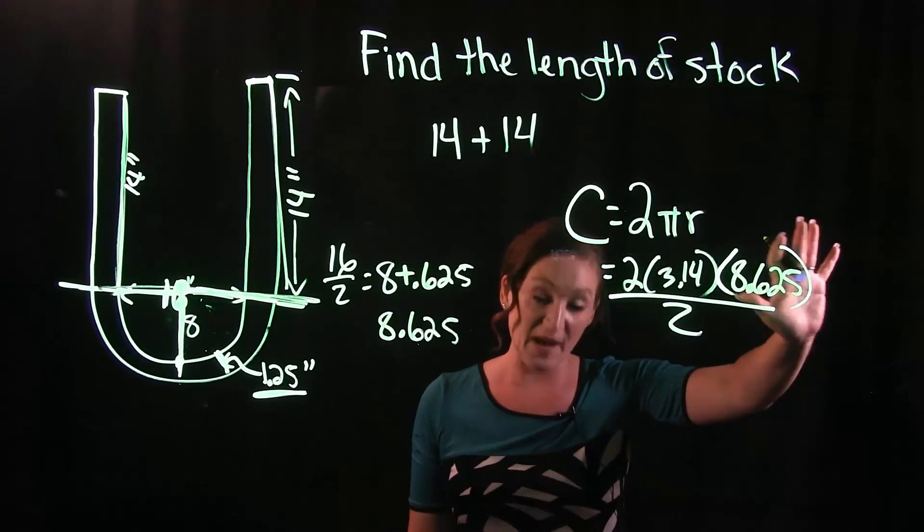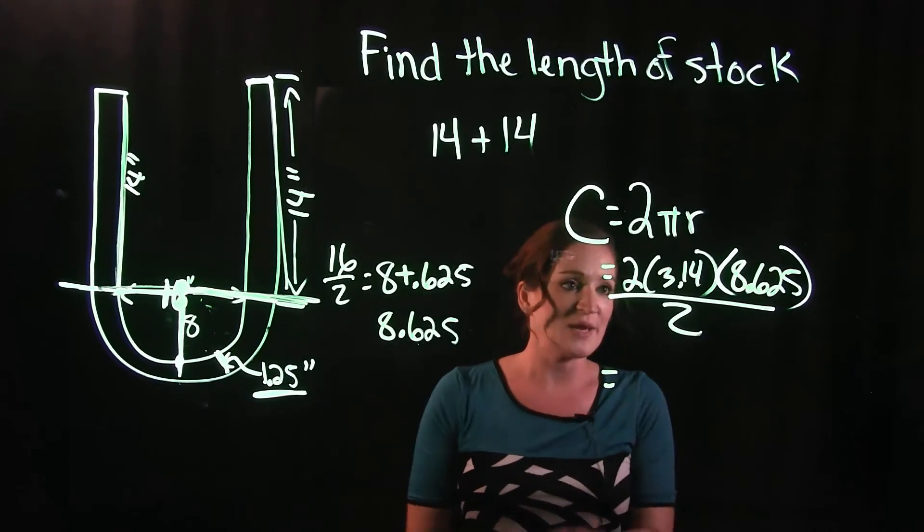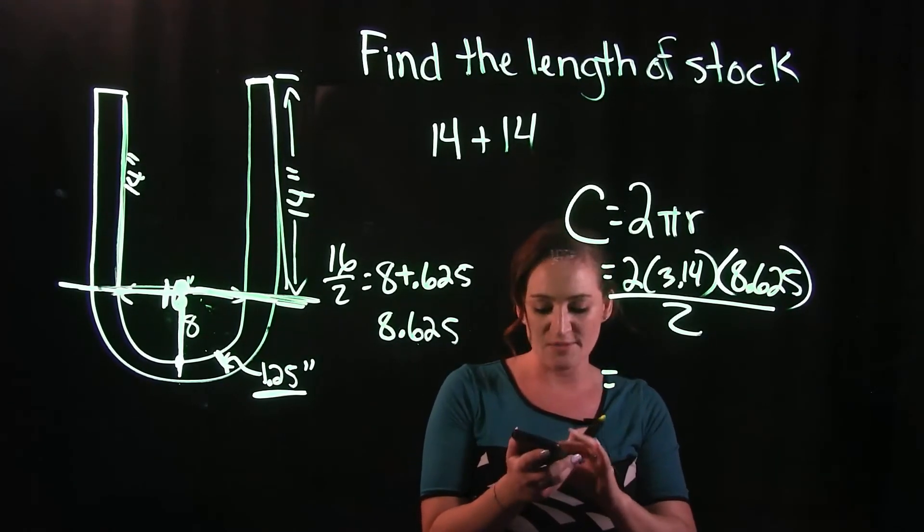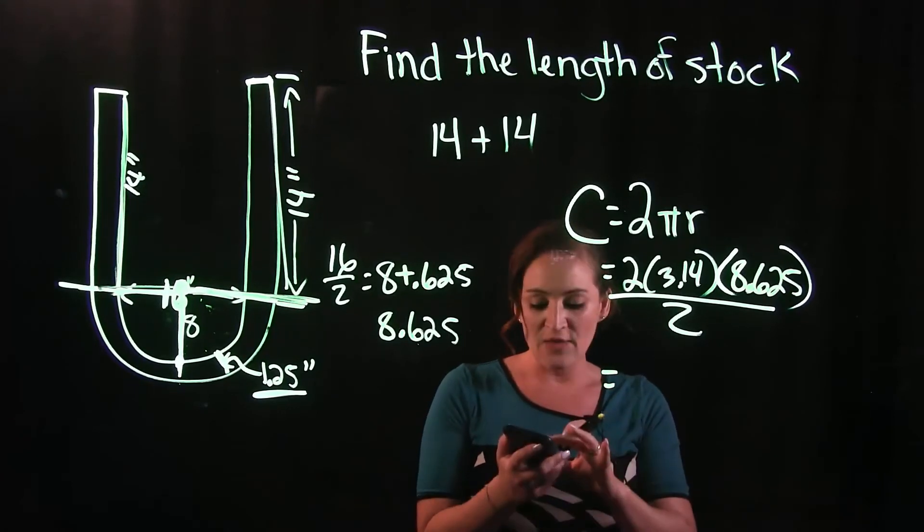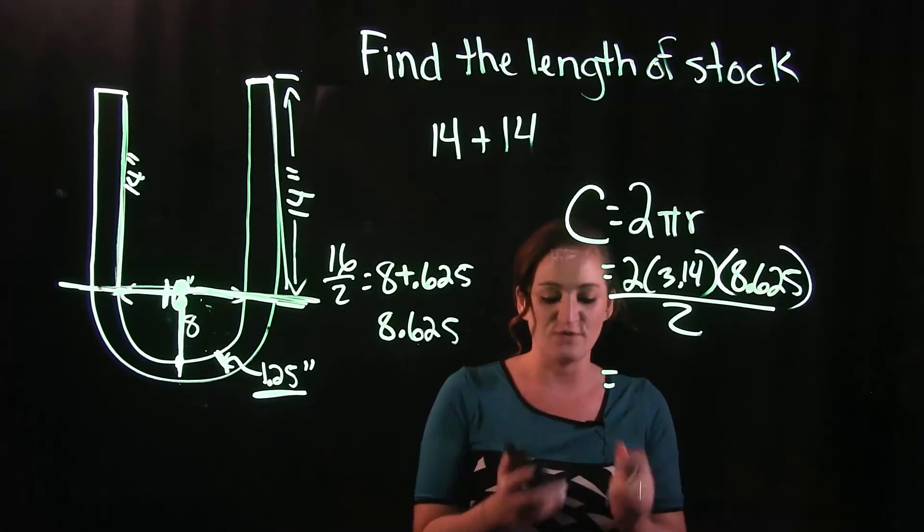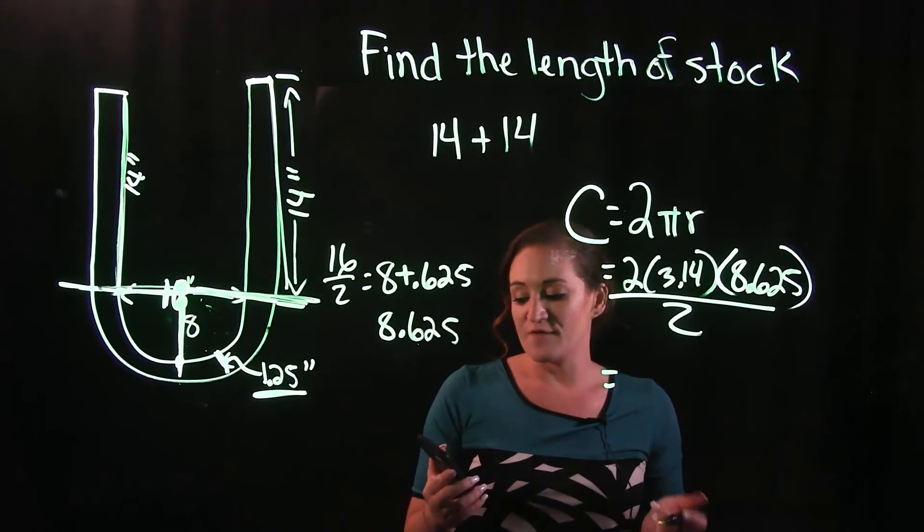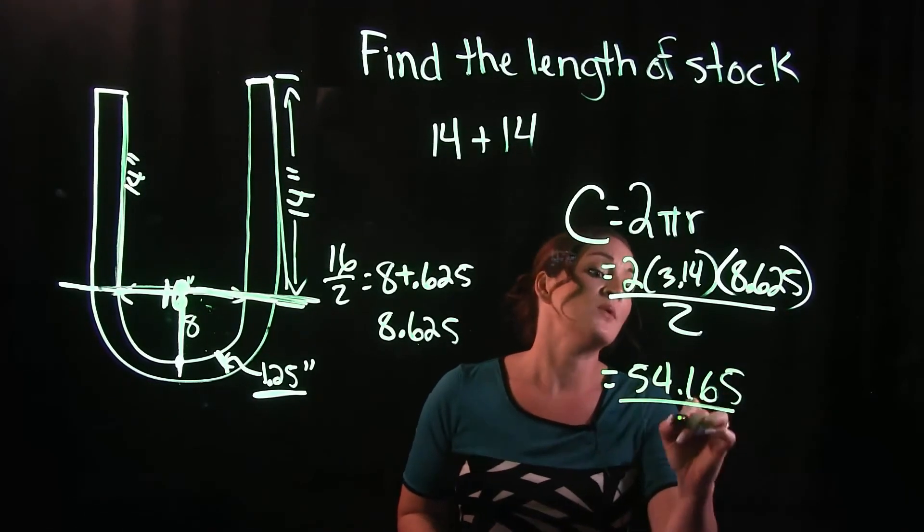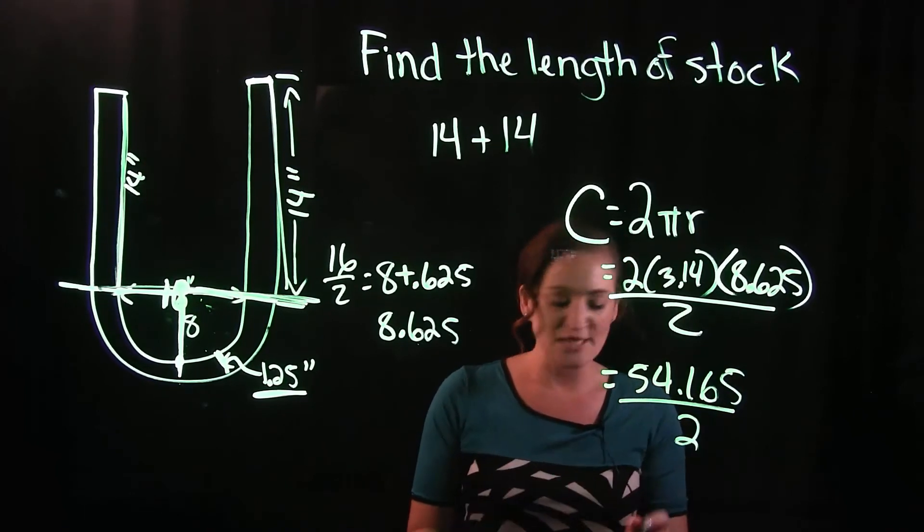Otherwise, when we calculate this, we have 2 times 3.14 and then times 8.625. I'm getting 54.165. But we need to remember to divide that by 2, so I'm getting a total of 27.08, rounded to the nearest hundredths.